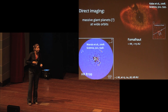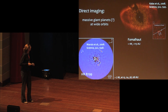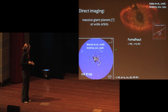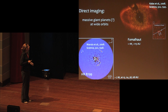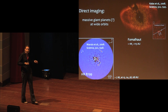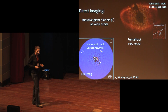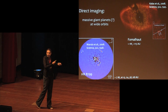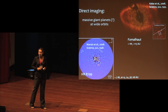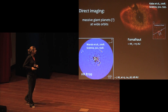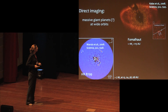This is the direct imaging planets — there are updated pictures, but this is to remind you that there are giant planets at very large radial distances, which is a relatively recent surprise for formation models.